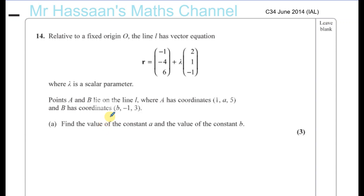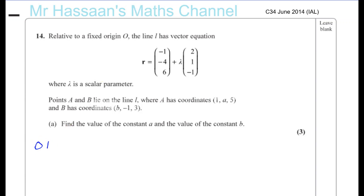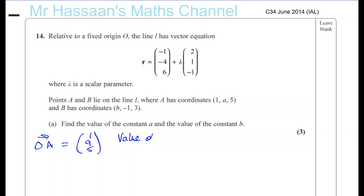So now, point A has coordinates 1, A, 5. The vector from O to A is therefore 1, A, 5. We need to find the value of lambda at the point A.